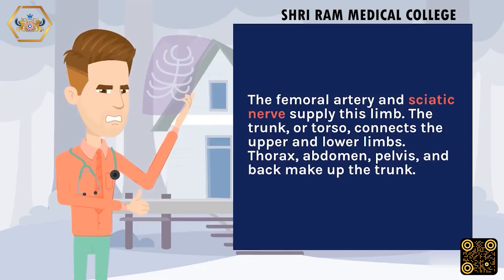The trunk, or torso, connects the upper and lower limbs. Thorax, abdomen, pelvis, and back make up the trunk.